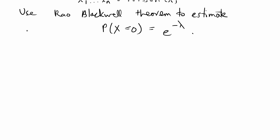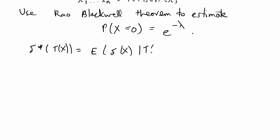The Rao-Blackwell theorem has the following formula. You can write it as delta star of t(x) is equal to the expected value of delta of x given t(x) is equal to t.